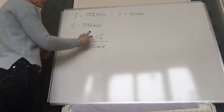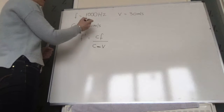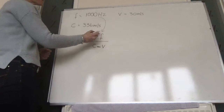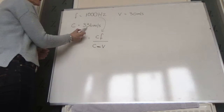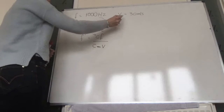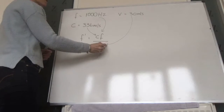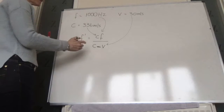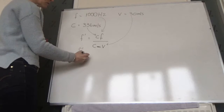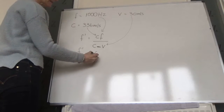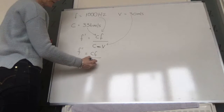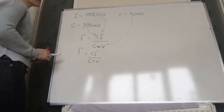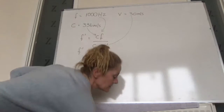So, source moving towards the observer uses C minus V. All you literally do is put the numbers in: 1,000 goes in for F, 336 goes in for C, V is 30, and you use the minus. For the source moving away from the observer, we use the formula with the plus, so that we get a lower frequency because the denominator is larger.